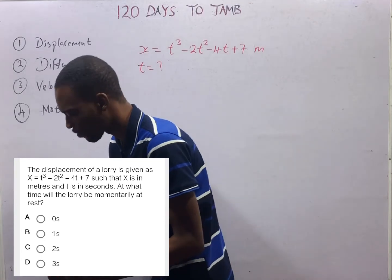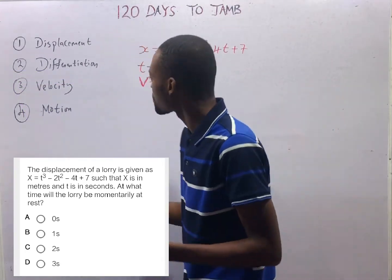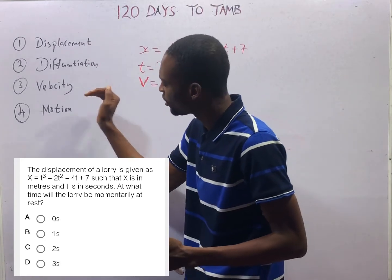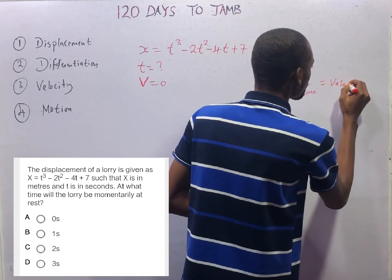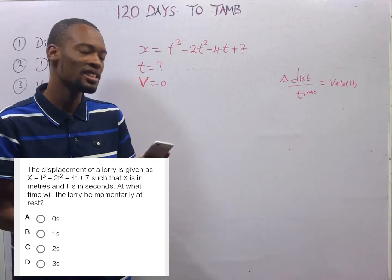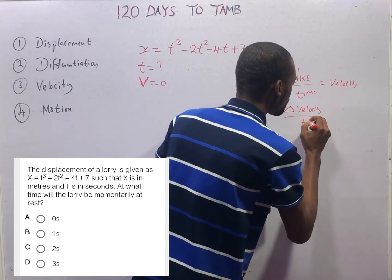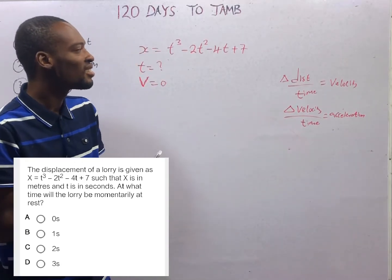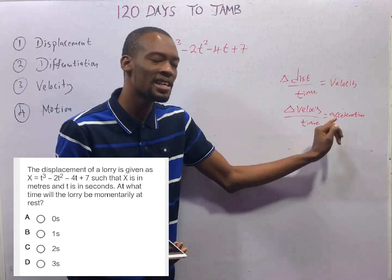A car is moving — at what time will the car be at rest? The lorry will be momentarily at rest when velocity is zero. What is the relationship between displacement and velocity? Change in displacement over time equals velocity, and change in velocity over time equals acceleration. When you differentiate displacement with respect to time, you get velocity. When you differentiate velocity, you get acceleration.